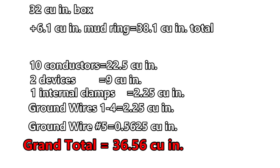So ground wires one through four get one full allowance for 2.25 cubic inches, and ground wire number five gets one quarter of one allowance — 2.25 divided by 4 is 0.5625 — giving us a grand total of 36.56 cubic inches. The box with the mud ring included is 38.1 cubic inches, so it passes. Congratulations! If you said it was going to pass, you're correct. Thank you very much and I hope this video was helpful.